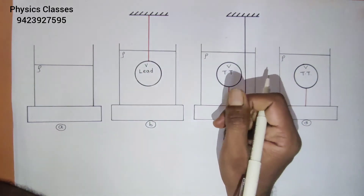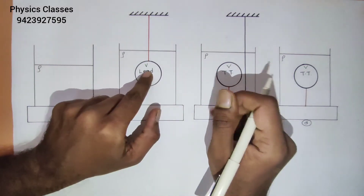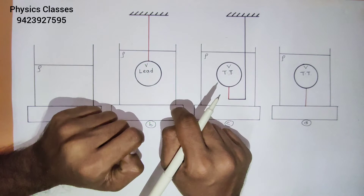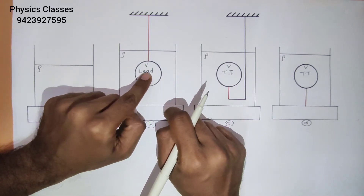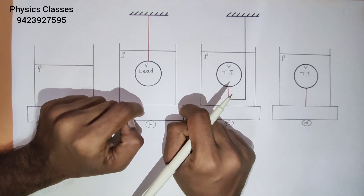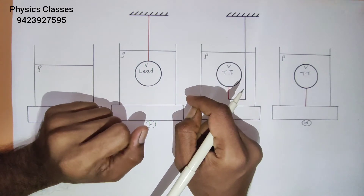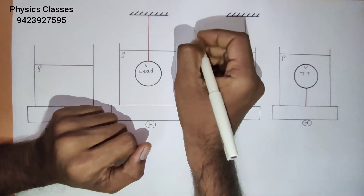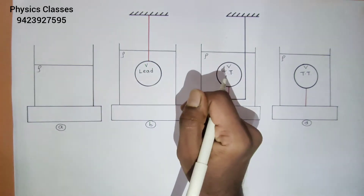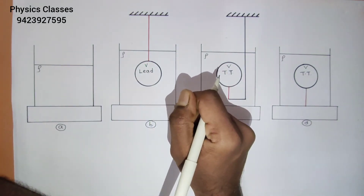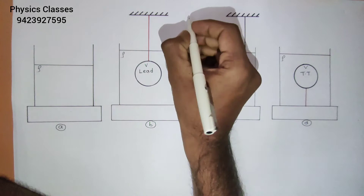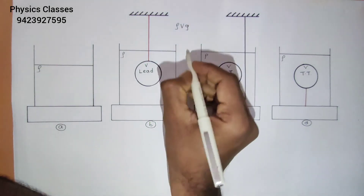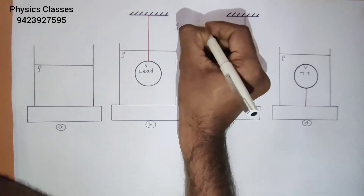Why the same? Because as the volume of all of them is the same, they will displace the same amount of water. And by Archimedes' principle, the buoyant force acting on them will be equal to the weight of the water displaced by them, which will be rho*V*g. So the buoyant force acting on all of them will be FB = rho*V*g.